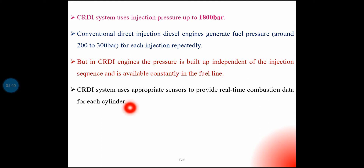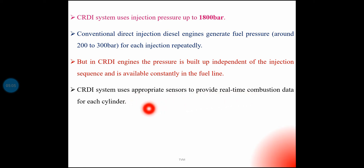The CRDI system uses appropriate sensors to provide real-time combustion data for each cylinder. The system uses sensors connected to an electronic control unit (ECU).